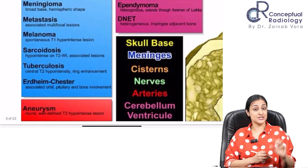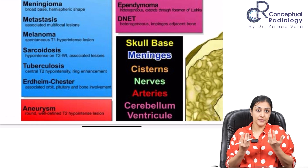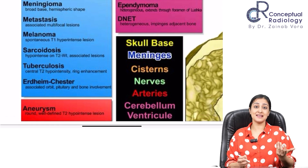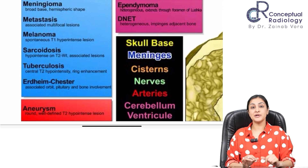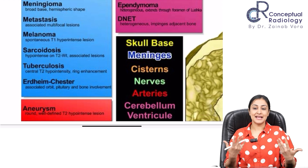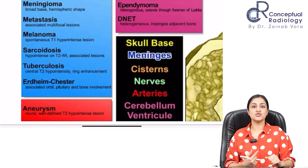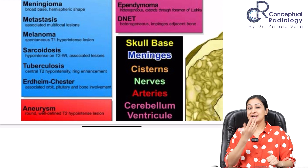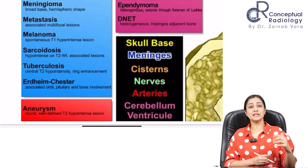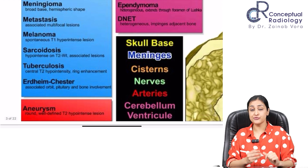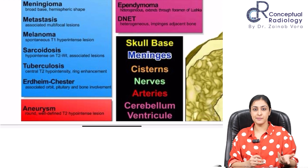Sarcoid will appear hypointense with associated lesions; TB will show ring enhancement and central hypointensity due to caseous necrosis. Erdheim-Chester disease is very rare but can involve the CP angle — look for associated systemic changes like perirenal lesions, bony changes, infundibular thickening, and intraconal orbital lesions indicating multifocal involvement.